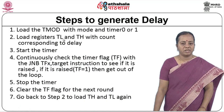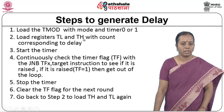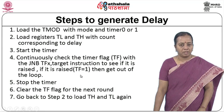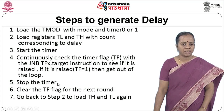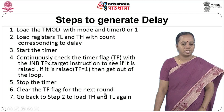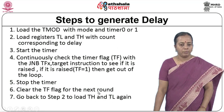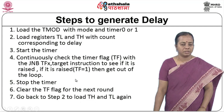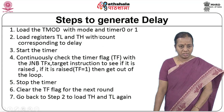Now we will look at how to generate a delay. First, TMOD has to be set with the required values. Then TL and TH have to be loaded with the desired delay value. Then we start the timer and check whether the timer flag TF is set. When it is set, we come out of the loop — this is how we generate a delay using the timer. Once the TF flag is set, the exact delay has been encountered. We then stop the timer, clear the TF flag, and if we need to generate the same delay again, reload TH and TL and repeat.